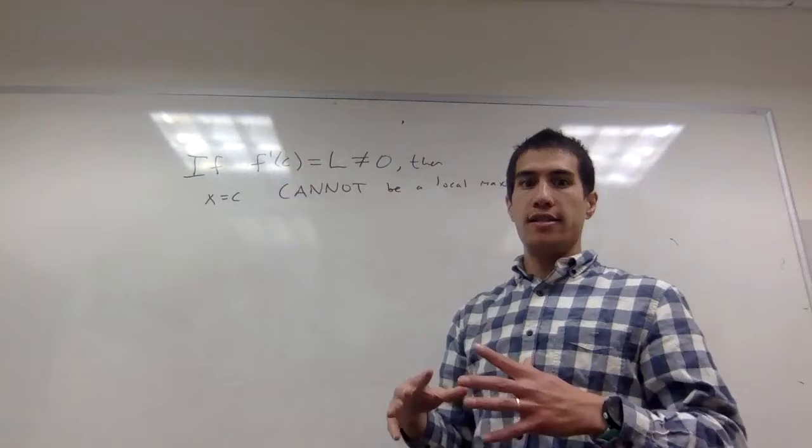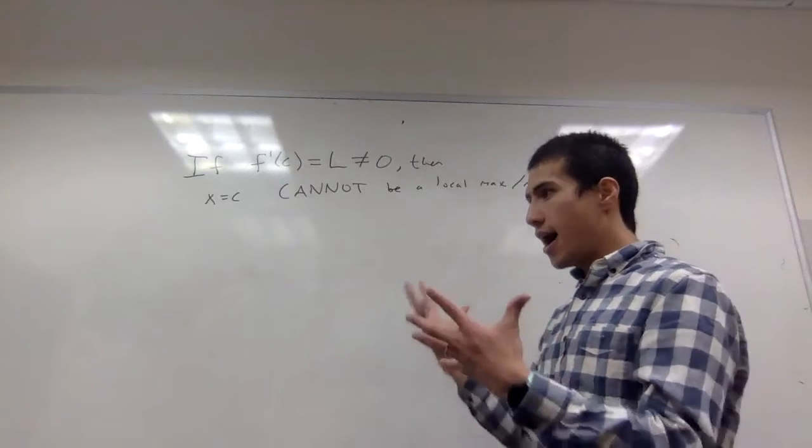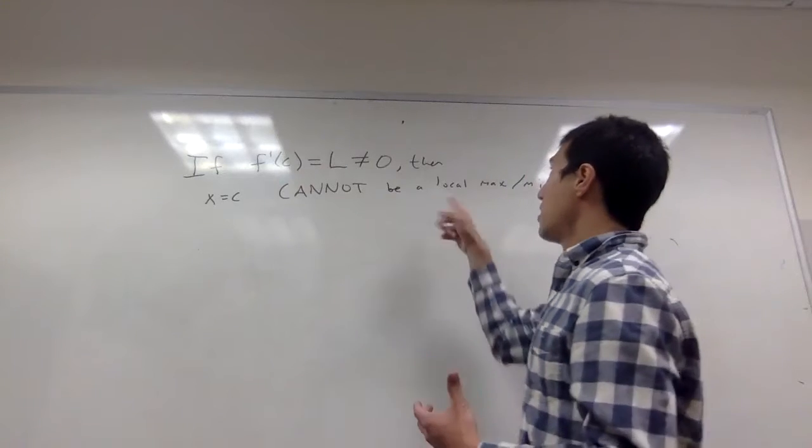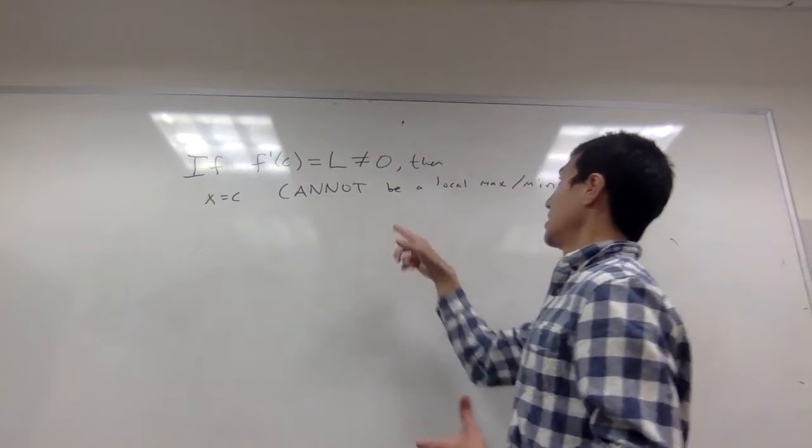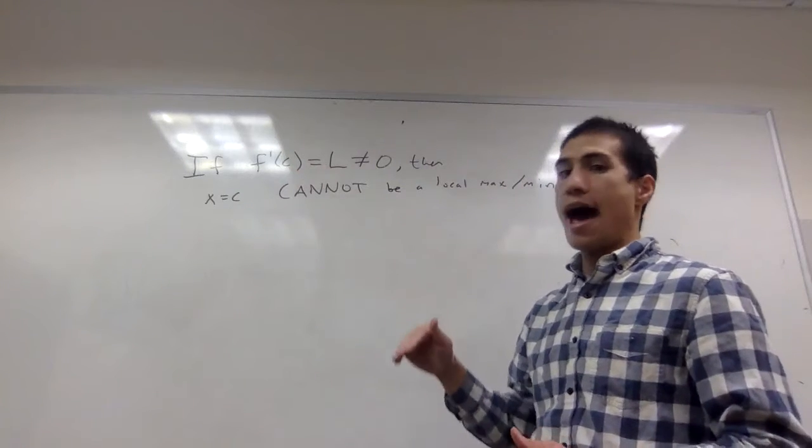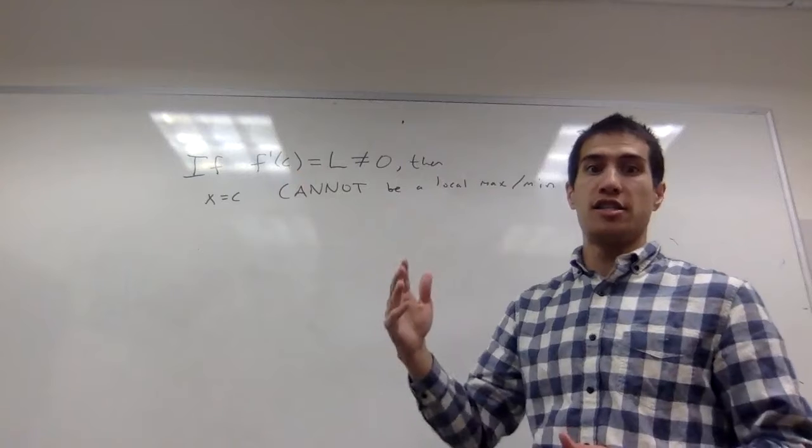The derivative makes sense and it's a number that's not zero. Then I want to show that x = c cannot be a local max or min. So maxes and mins cannot happen when the derivative is non-zero.